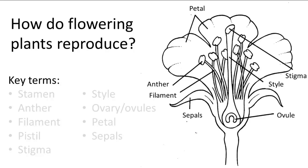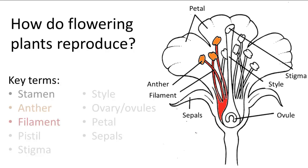Here's the cross-section of an idealized flower. The stamen is the male reproductive organ of the flower, made of the anther and the filament. The filament is a stem-like structure shown in red that supports the anther, and the anther, shown in orange, makes pollen.